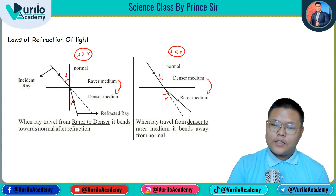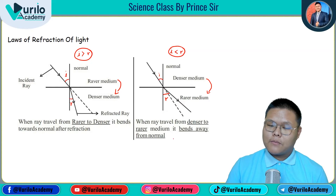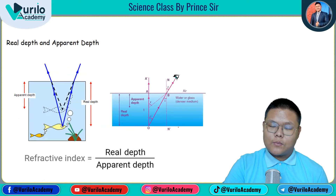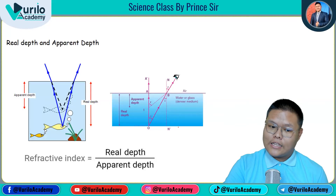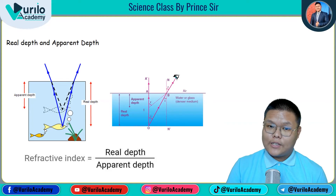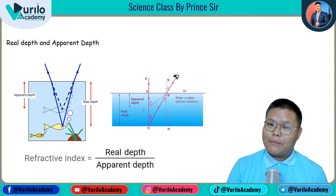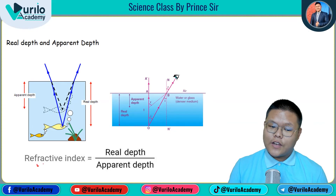Always remember: when going from rarer to denser medium, light bends towards the normal. When going from denser to rarer medium, light bends away from the normal. There is also the concept of real depth and apparent depth, which relates to refraction of light — like when a pencil appears bent in water.